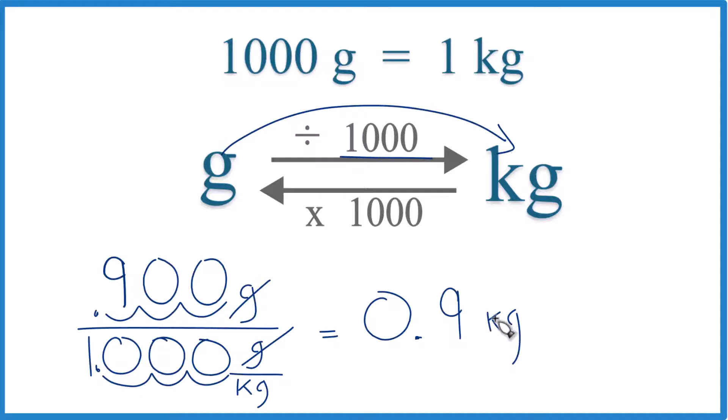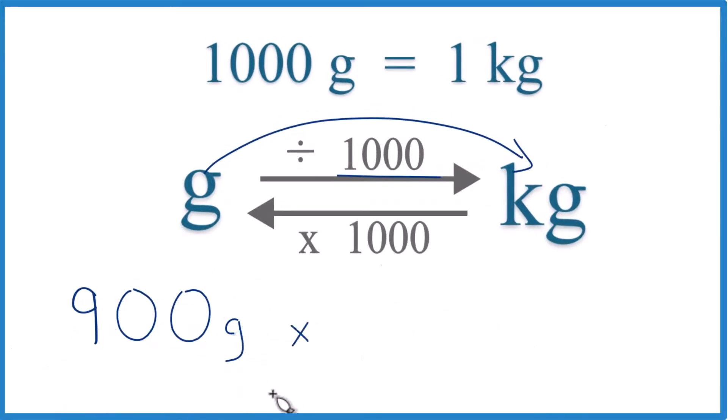Sometimes teachers want you to multiply by a conversion factor. It's the same thing, but let me show you how to do it. So we have grams on the top. We want to have grams on the bottom, so they cancel out. So our conversion factor looks like this. We have grams on the bottom. So we multiply.